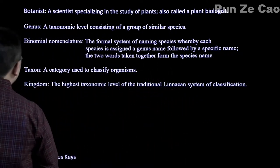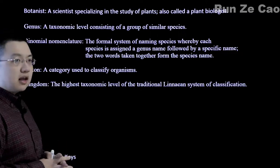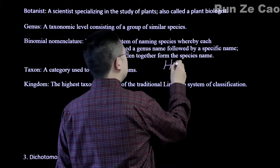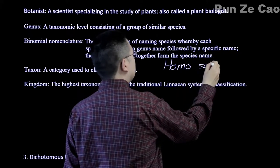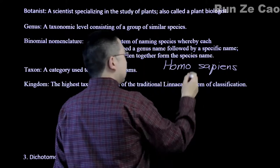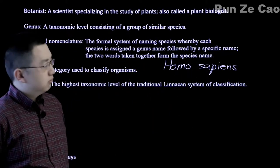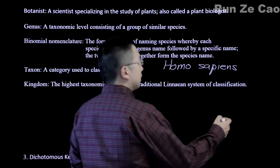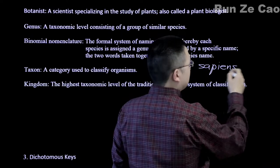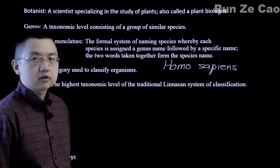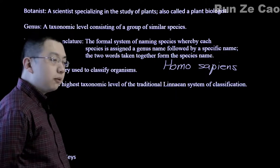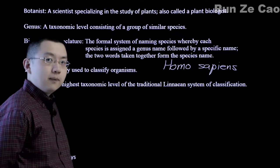Linnaeus came up with binomial nomenclature — a system where each species has a genus name followed by a specific name; the two words together form the species name. Note these should be italicized: the genus name is uppercase to start, the species name is lowercase to start. Any subspecies name is also written lowercase after that — for example, Homo sapiens sapiens. Currently only Homo sapiens remains of the genus Homo.